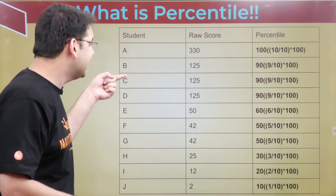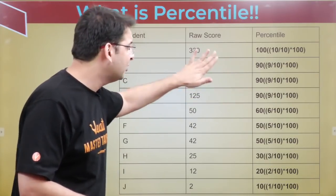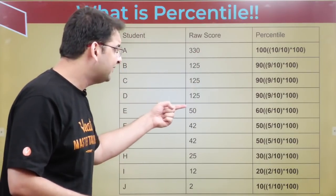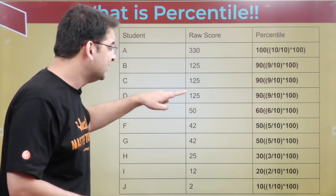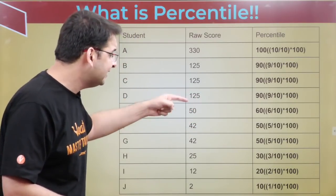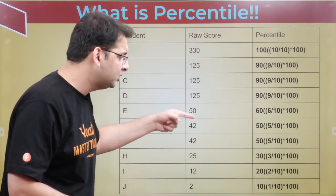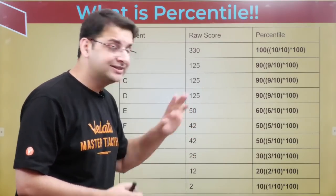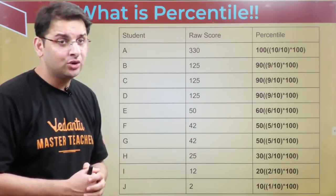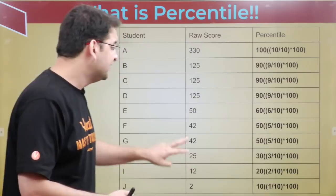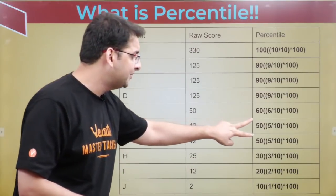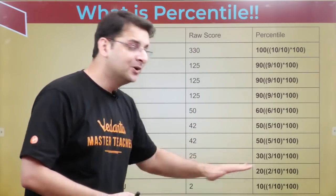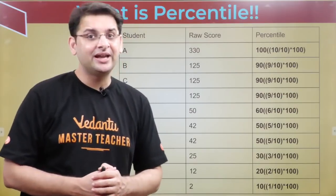Likewise, C and D also have 90 percentile because they have the same marks as B. The candidate who scored 50 has a percentile of 60, because below 50 there are only 6 candidates — so 6 out of 10 into 100. The candidates scoring 42 and 42 each have 50 percentile. Followed by 30, 20, and the last child whose percentile is 10.